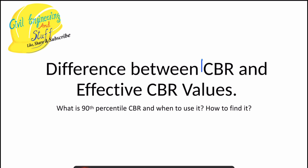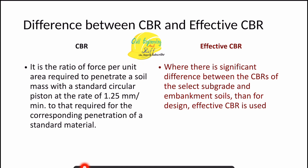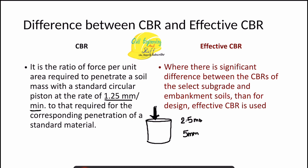CBR, or California Bearing Ratio, is the ratio expressed in percentage of force per unit area required to penetrate a soil mass with a standard circular piston at the rate of 1.25 mm per minute, compared to that required for the corresponding penetration of a standard material. We apply load over the soil sample to find the bearing property of the soil, and at two standard penetrations — 2.5 mm and 5 mm — we find out the CBR value.